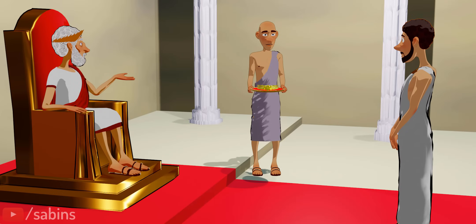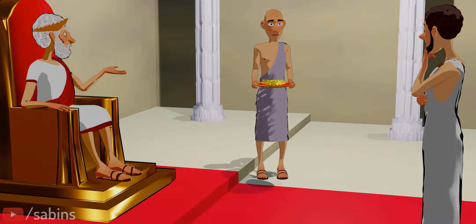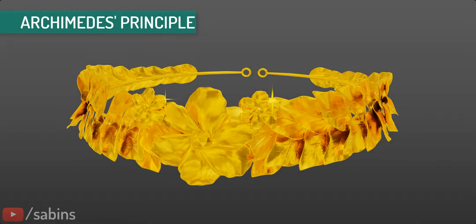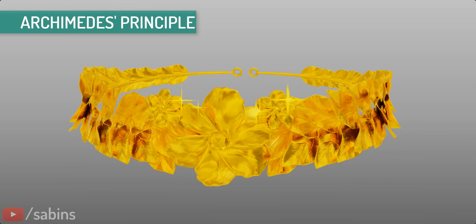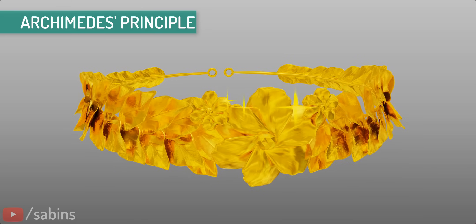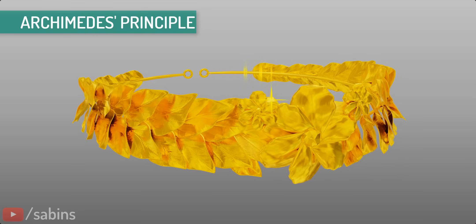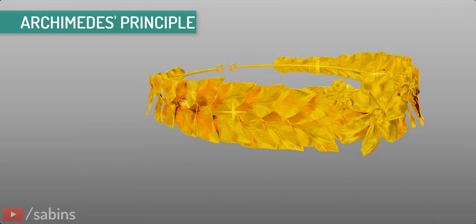Archimedes found a solution to this problem by discovering one of the most important principles of physics, what came to be known as the Archimedes Principle. First, let's understand Archimedes' principle conceptually, and then we'll come back and see how Archimedes solved this interesting problem.